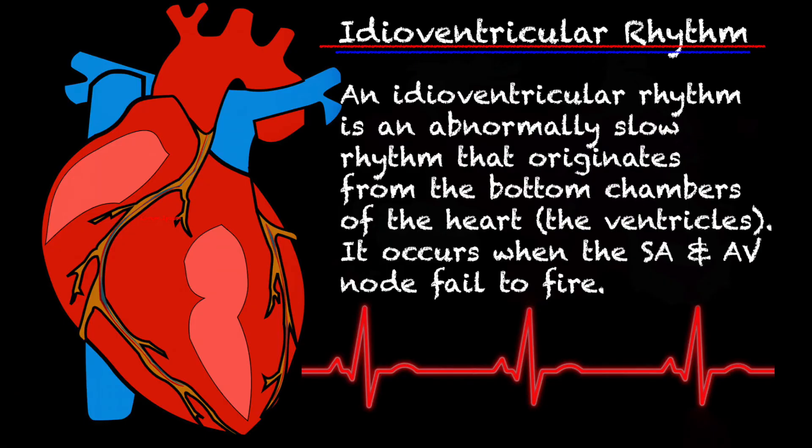So let's talk about what an idioventricular rhythm actually is. In a nutshell, an idioventricular rhythm is an abnormally slow rhythm that originates from the bottom chambers of the heart, also known as the ventricles. It occurs when the SA node and the AV node fail to fire, so all the impulses are coming from the ventricles.